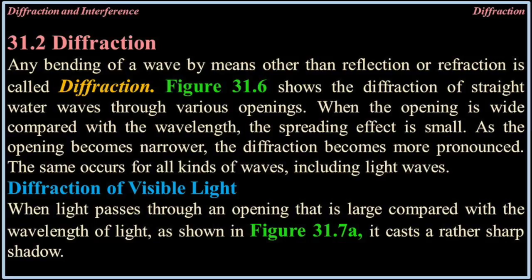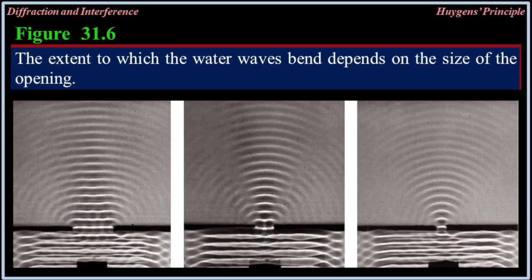31.2 Diffraction. Any bending of waves by means other than reflection or refraction is called diffraction. Figure 31.6 shows the diffraction of straight water waves through various openings. When the opening is wide compared with the wavelength, the spreading effect is small. As the opening becomes narrower, the diffraction becomes more pronounced. The same occurs for all kinds of waves, including light waves.